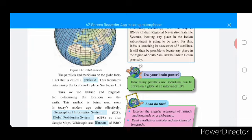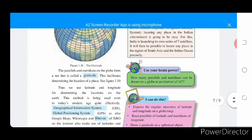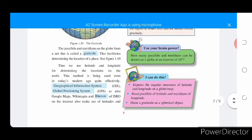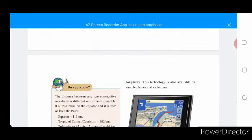Thus, we use latitude and longitude for determining the location on the earth. This method is being used even in today's modern age quite efficiently. Geographical Information System, GIS, Geographical Positioning System, GPS, Google Maps, Wikimapia and Bhuvan of ISRO on the internet also make use of latitude and longitude. The technology is also available in mobile phones and motor cars.